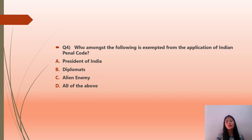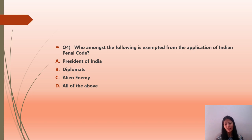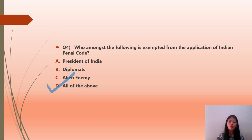Question number 4: Who among the following is exempted from the application of the Indian Penal Code? Option A: President of India; option B: diplomats; option C: alien enemy; option D: all of the above. The correct answer is all of the above. This is theoretical — go through your books.